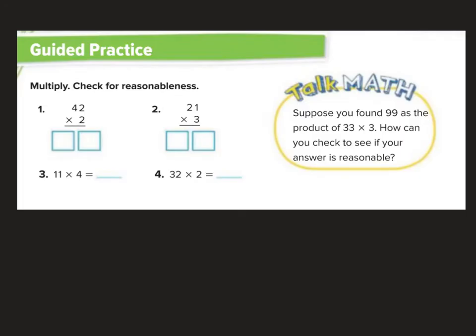Multiply and check for reasonableness. First I do 2 times 2 is 4. 2 times 4 is 8. Now, if I were going to check for reasonableness, I would do 40 times 2. Two groups of 40. 40 plus 40 is 80. And those are reasonable, they're close to each other.